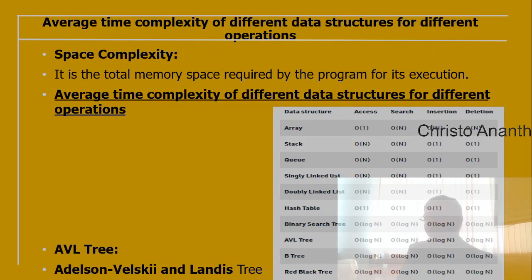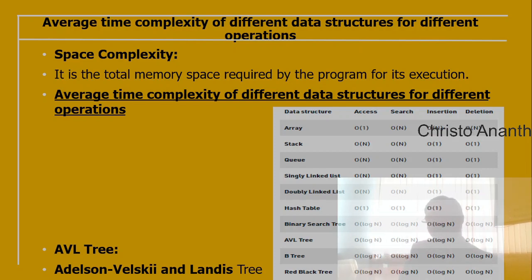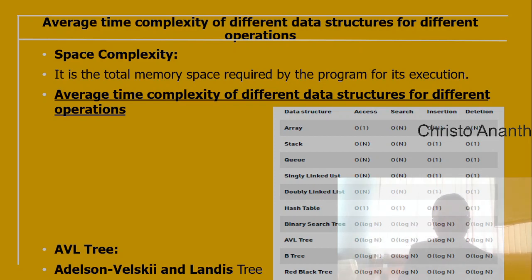Time complexity is defined as the number of times a particular instruction set is executed, rather than the total time taken. This is because total time also depends on the compiler being used, the processor speed, and so on. Space complexity is the total memory space required by the program for execution.